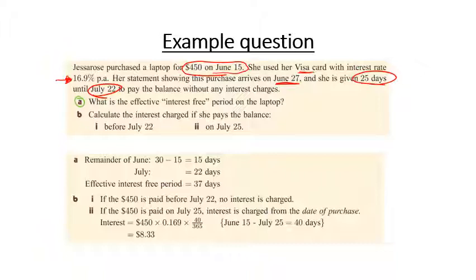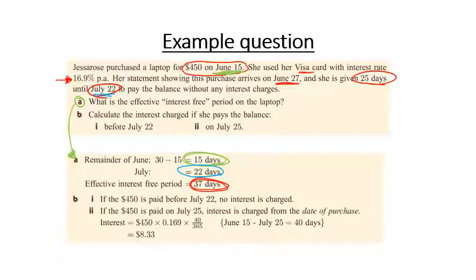She buys the laptop on June 15th, so she has the rest of June — 15 days remaining (June has 30 days). She then has until July 22nd, which is another 22 days. Adding them together gives us 37 days. So she effectively has 37 days to pay the money back before interest is charged on this purchase.